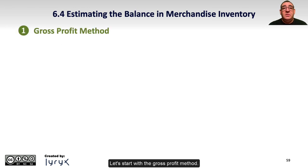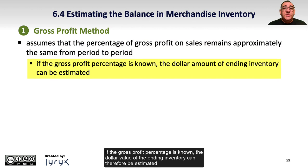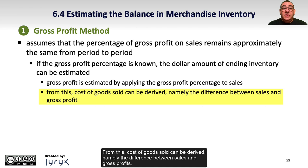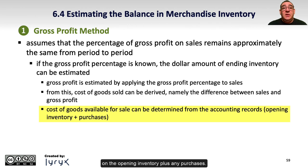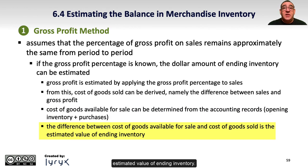Let's start with the gross profit method. This method assumes that the percentage of gross profit on sales remains approximately the same or consistent from period to period. If the gross profit percentage is known, the dollar value of the ending inventory can therefore be estimated. Gross profit is estimated by applying the gross profit percentage to sales. From this, cost of goods sold can be derived — namely the difference between sales and gross profit. Cost of goods available for sale can then be determined from the accounting records based on the opening inventory plus any purchases. The difference between the cost of goods available for sale and the cost of goods sold is the estimated value of ending inventory.